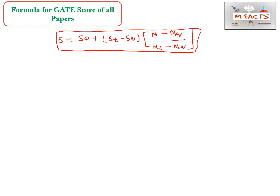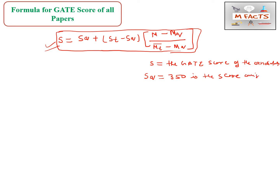Now I am writing the terms and their meanings. S is the GATE score of the candidate — this is the value we want to calculate. The Sq value is 350, which is predefined for the calculation of the GATE score, and this 350 is already assigned to those qualifying candidates who are writing this exam.